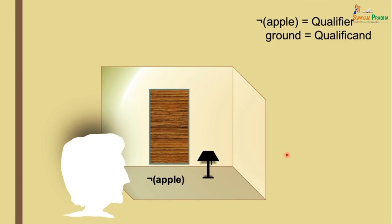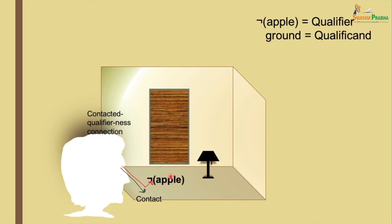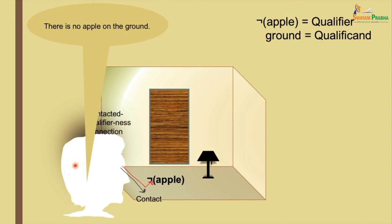In the pictorial analysis: a contact is established between the ground and the eye of the subject. Following that, the next sannikarsha is born — contacted qualifier-ness (Sanyukta Visheshana-ta), a connection between the eye and a qualifier going through contact. As a result, the subject cognizes 'there is no apple on the ground.' There is also another step: this person should first have thought about apples. Not that every time you see a ground you automatically think there is no apple on it — before that, you need to think about apples.